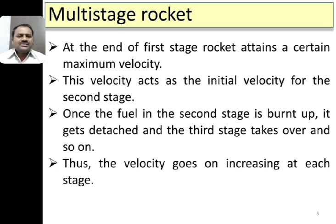Once the first stage fuel is burnt out, the second stage starts, and the maximum velocity attained during the first stage acts as the initial velocity for the second stage. Once the fuel in the second stage is burnt up, it gets detached and the third stage takes over, and the process continues. Thus the velocity goes on increasing at each stage of the rocket.